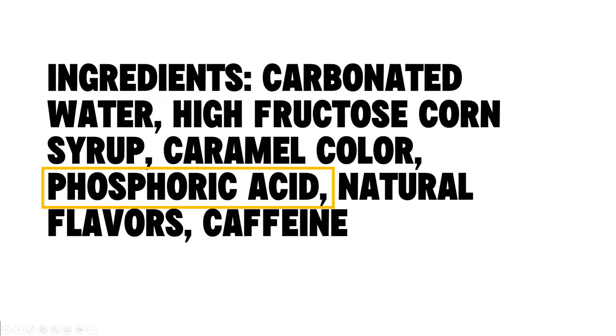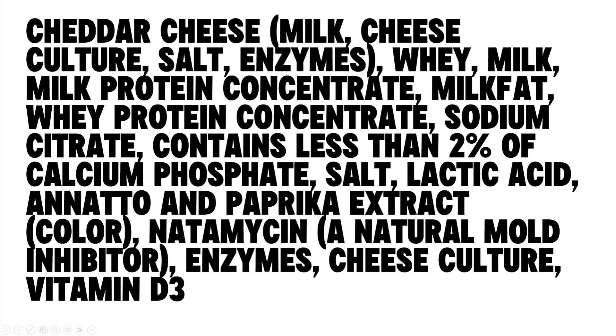If you've done any research on the CKD diet you might have come across information saying that you need to restrict your phosphorus intake, but that's not entirely accurate. A more accurate statement is that you need to be restricting your intake of phosphorus additives. A phosphorus additive is any substance added to food that contains phosphorus. For example, Coca-Cola contains phosphoric acid to prevent the brown coloring from turning black, and American cheese contains calcium phosphate as an emulsifier and added calcium source.